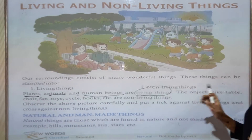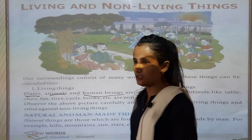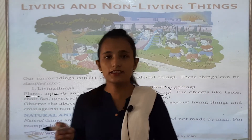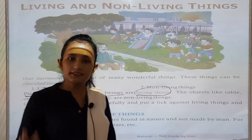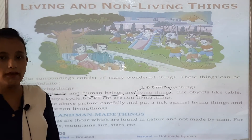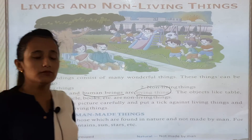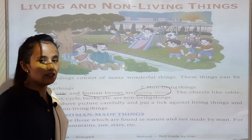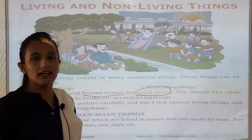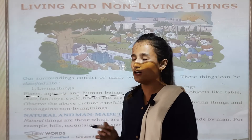But non-living things cannot breathe. For example, chair, toys — these are man-made things. And the natural things are the moon, stars, sun — these are natural things that we can find on our earth.